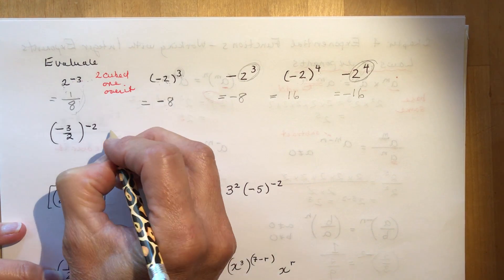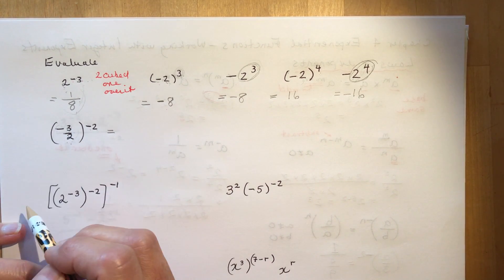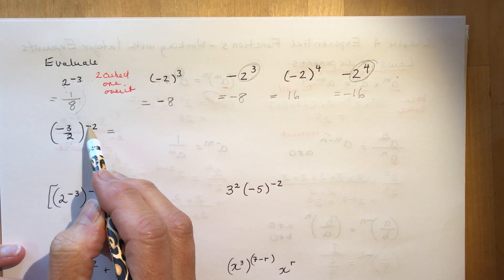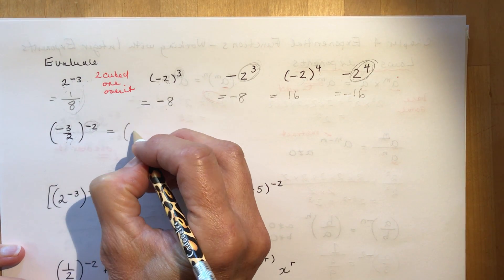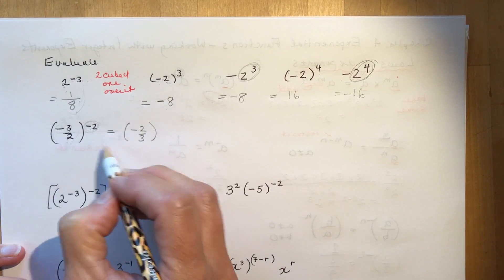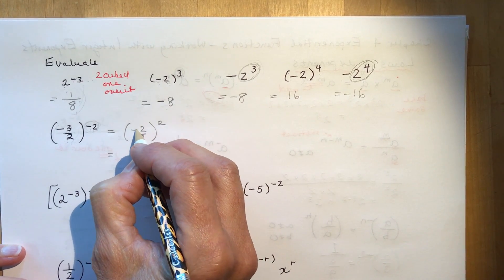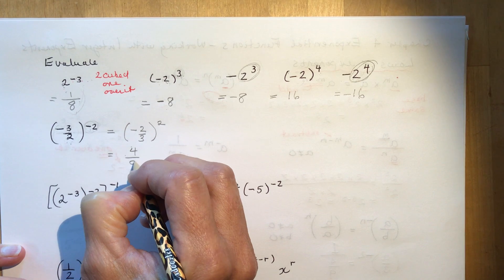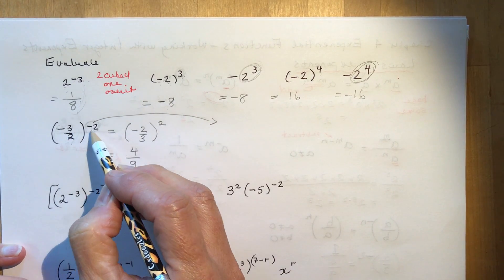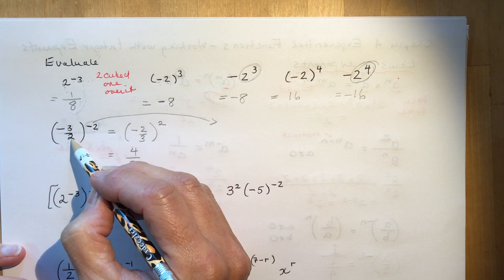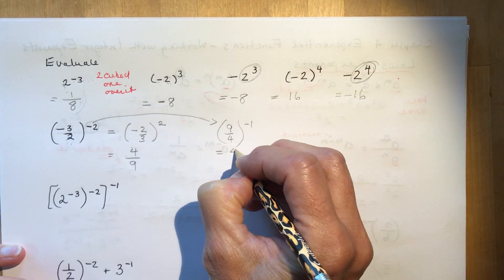For minus three halves to the negative two: you can flip the fraction to get rid of the negative exponent — making it minus two thirds squared. A negative times a negative is positive, so two squared is four and three squared is nine, giving four over nine. Alternatively, three over two squared is nine over four, and one over that is four over nine — same answer.